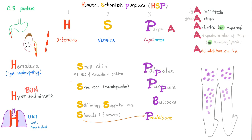What is the treatment of Henoch-Schönlein Purpura? Most cases are self-limiting — you just leave them alone and provide supportive care. But if severe, give steroids. Why steroids? Because it's an immune antibody disorder, and steroids are immunosuppressants — they will suppress the nasty IgA antibody production.